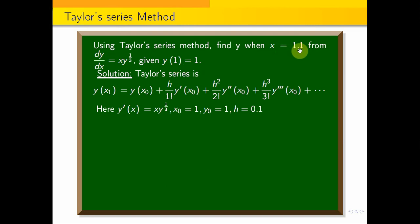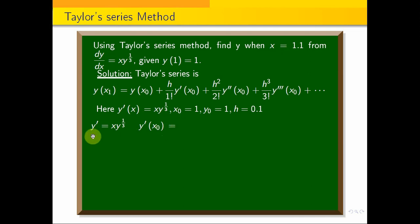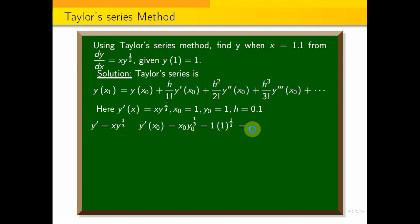So x1 = x0 + h = 1 + 0.1 = 1.1. Now we compute y'(x0): y' = x·y^(1/3). Substituting x0 = 1 and y0 = 1, we get y'(x0) = 1 × 1^(1/3) = 1 × 1 = 1. So y'(x0) = 1.